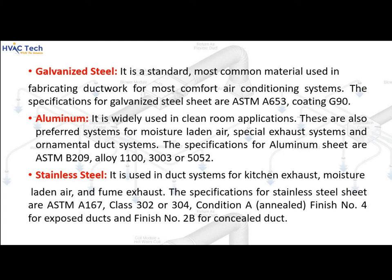Aluminum is widely used in clean room applications and is also preferred for moisture-laden air systems, special exhaust systems, and ornamental duct systems. The specifications for aluminum sheet are ASTM B209, alloy 1100, 3000, and 5052.